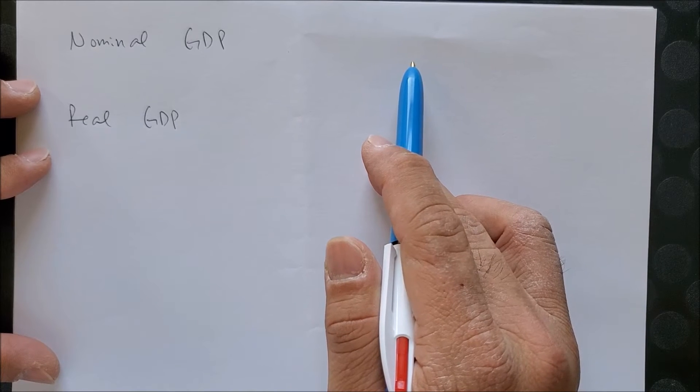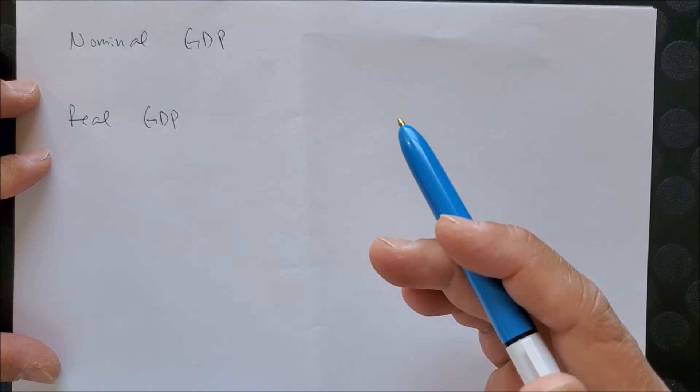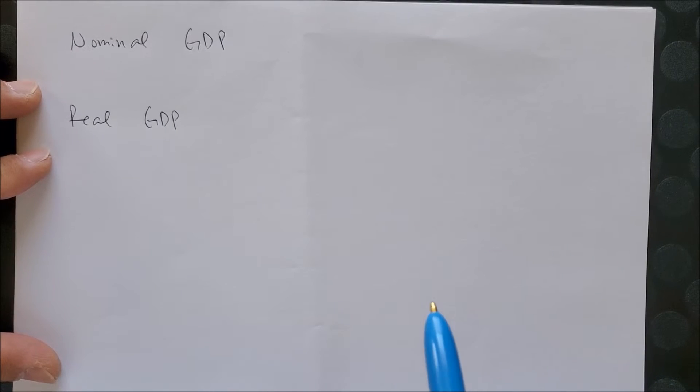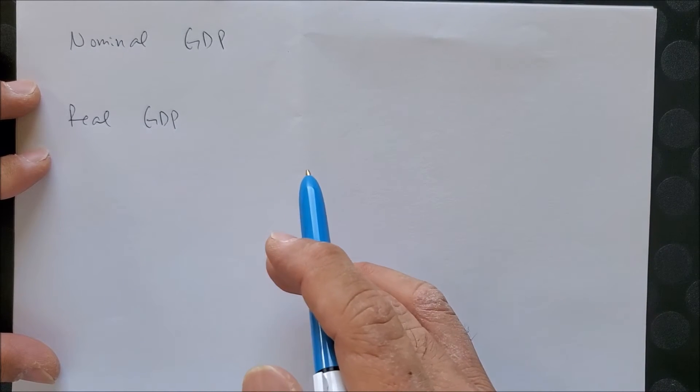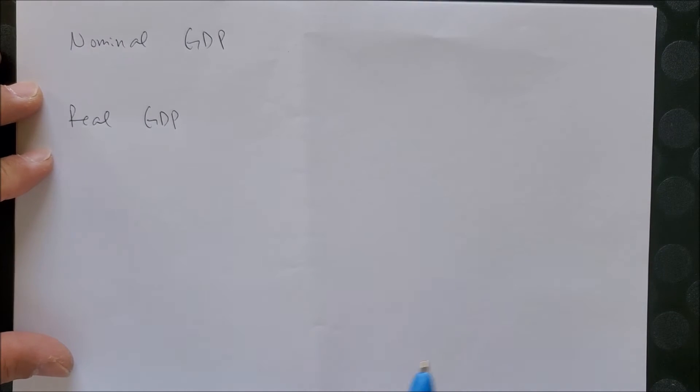If we want to see real growth, we need to take a price at a certain year and then be able to look at the growth from year to year. A good example we can look at is something called the GDP deflator.